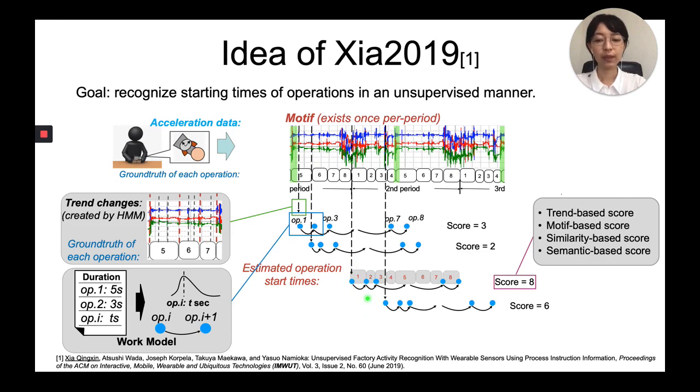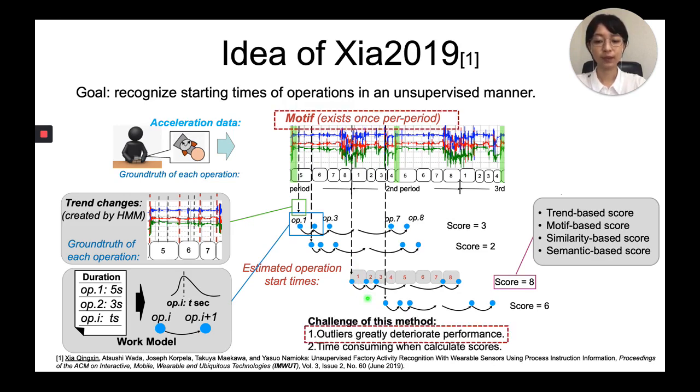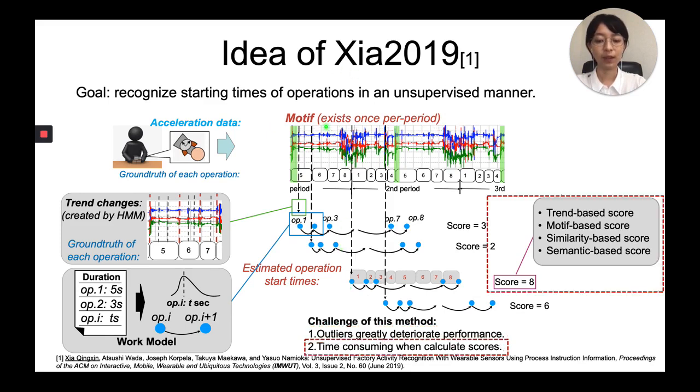Well, this method still has two main challenges. The accuracy decreases when outlier appears, which is caused by the failure of tracking motifs, and time-consuming while calculating the scores. So let's discuss them in detail.